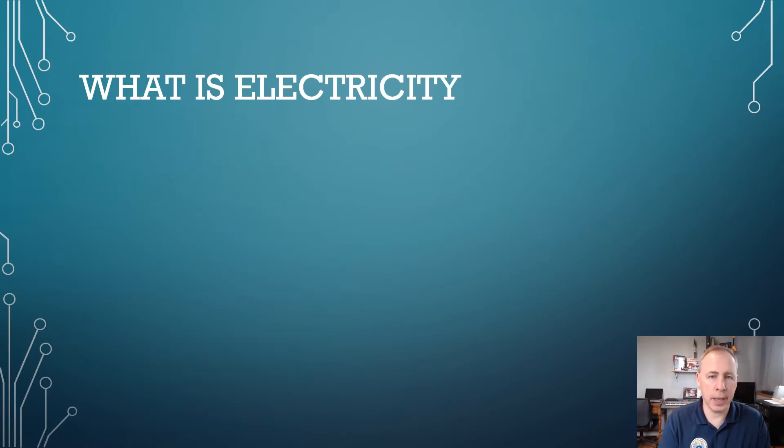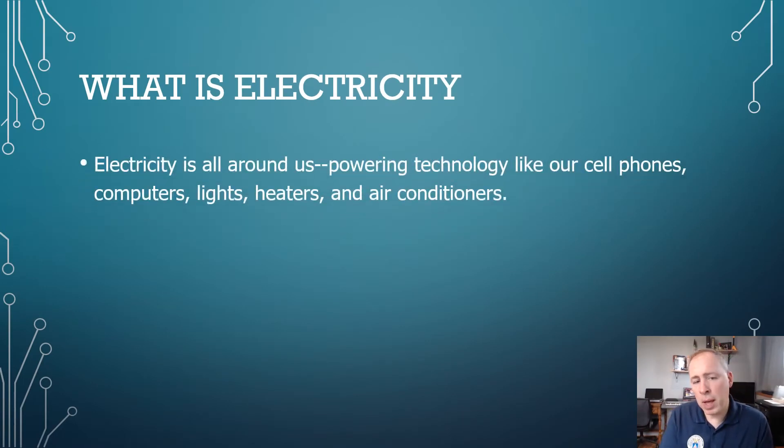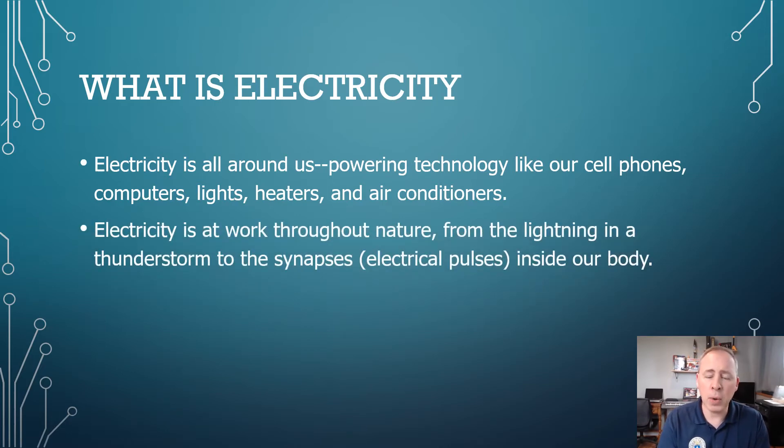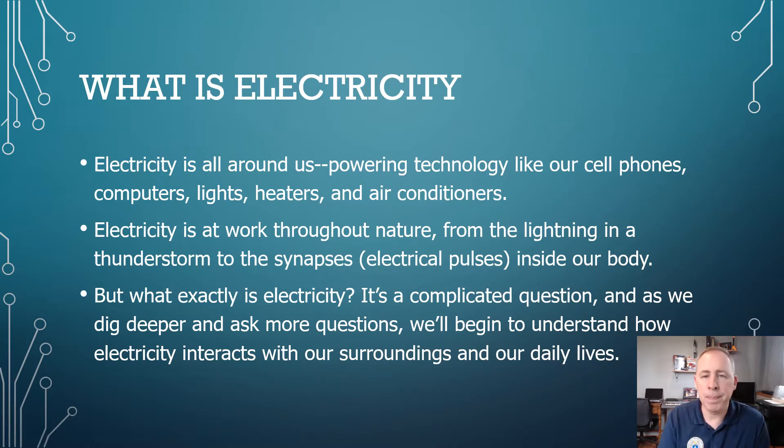Let's ask the question, what is electricity? Well, electricity is all around us. It's powering our technology, our cell phones, computers, lights, video games, heaters, air conditioners, cars, and a lot of things around our house that we really don't even think about. We just take it for granted that we flip a switch and something's going to power on. So electricity is at work throughout nature from the lightning in a thunderstorm to the synapses and electrical impulses inside our body that cause our organs to function and our brains to think. But what exactly is electricity? Kind of a complicated question. And as we dig deeper and ask questions, we'll begin to understand how electricity interacts with our surroundings and our daily lives.